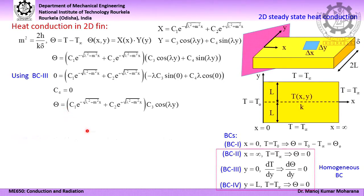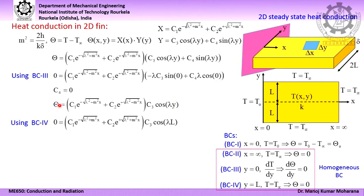What remains is theta = [C₁·e^(−√(λ²+m²)·x) + C₂·e^(+√(λ²+m²)·x)] times C₃·cos(λy). Then we apply boundary condition 4: at y = L, theta = 0. Substituting y = L gives C₃·cos(λL) = 0. There are two options: either C₃ = 0 or cos(λL) = 0. If C₃ = 0, everything becomes zero — so C₃ = 0 is not possible. Therefore, the other alternative is cos(λL) = 0.